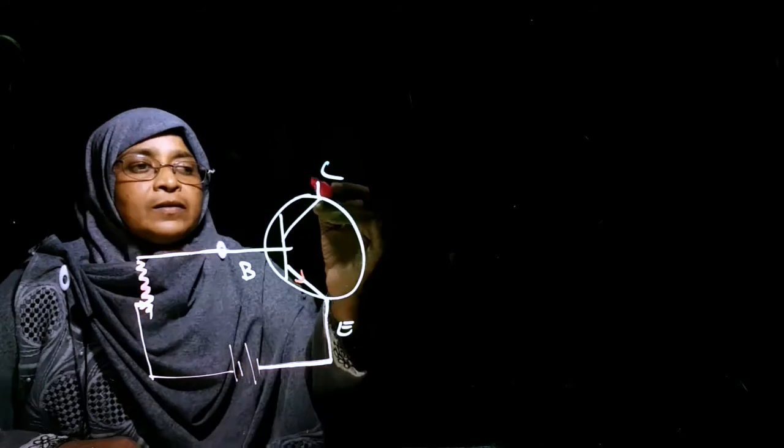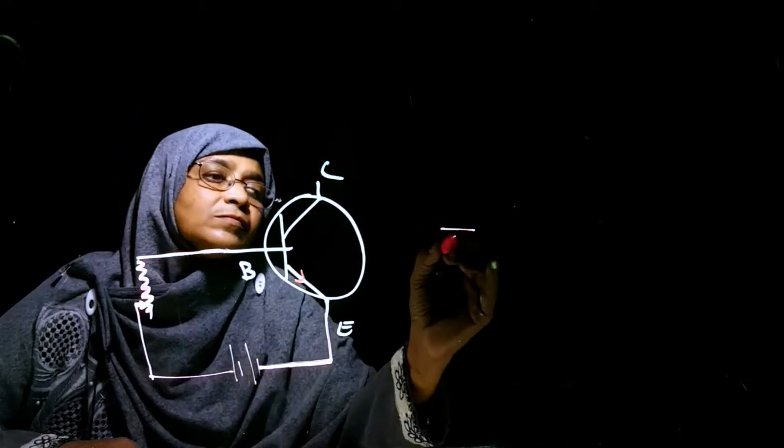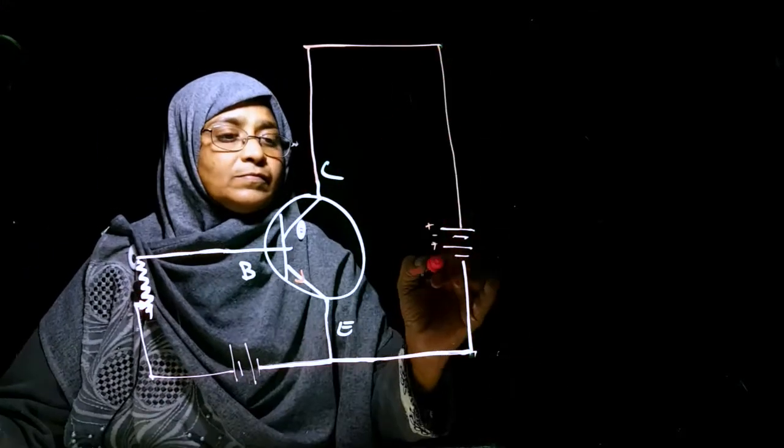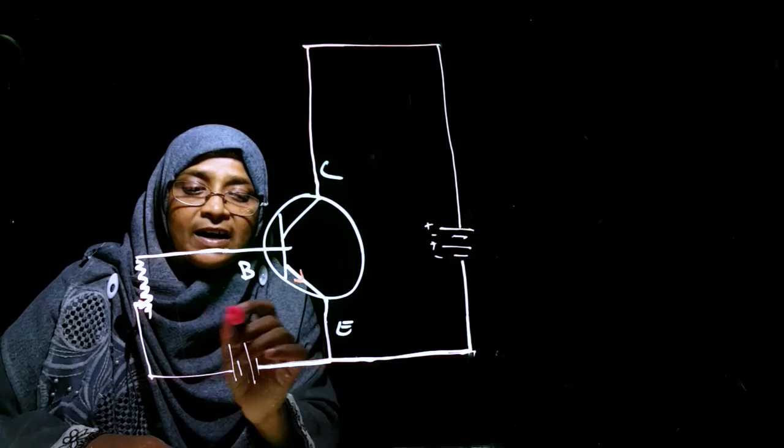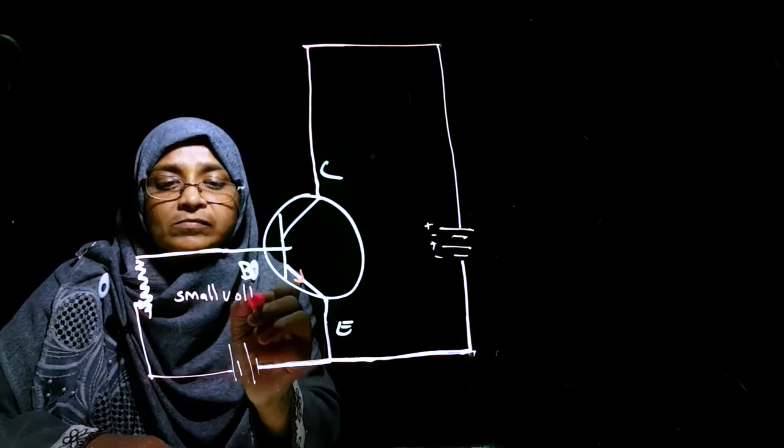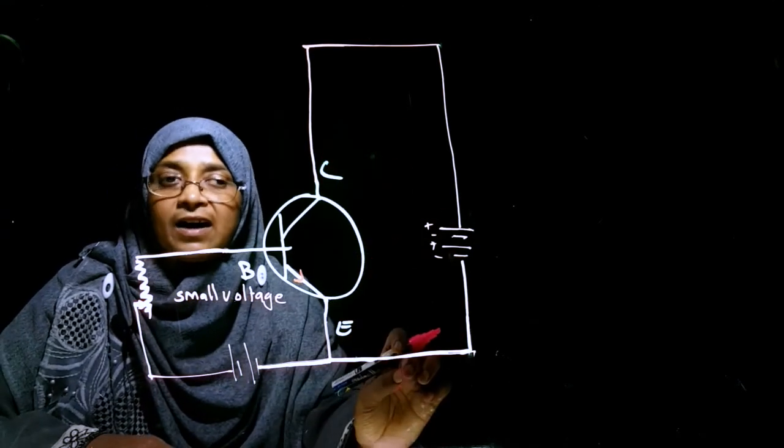This collector should be reversely biased. Forwardly biased and supply with a small voltage. Collector reverse bias with a high voltage.